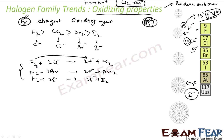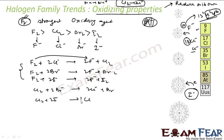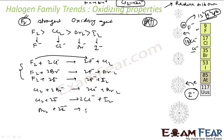Chlorine can oxidize both bromine and iodine. Bromine can oxidize only iodine. That is the relative oxidizing power among the halogens.